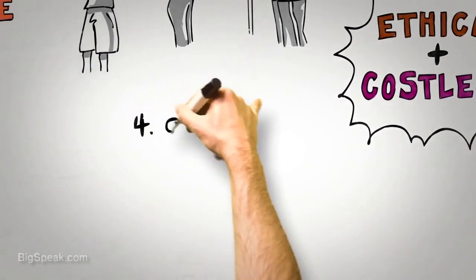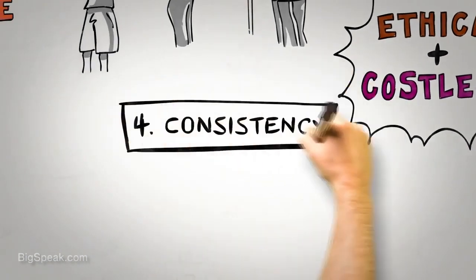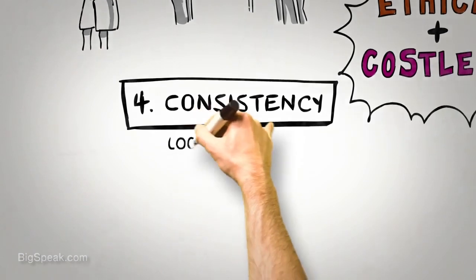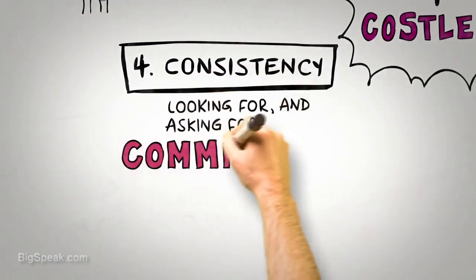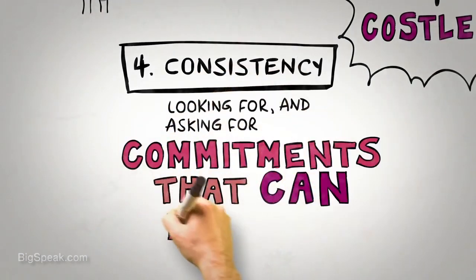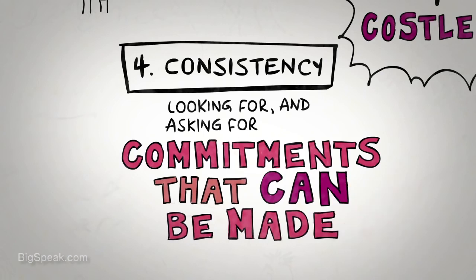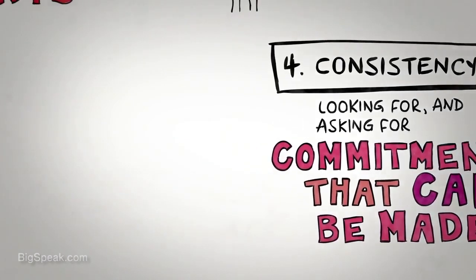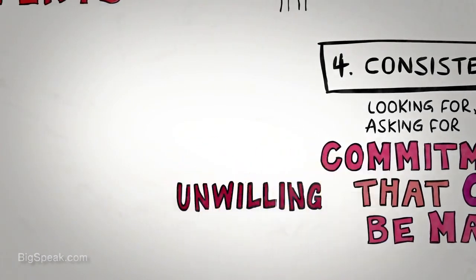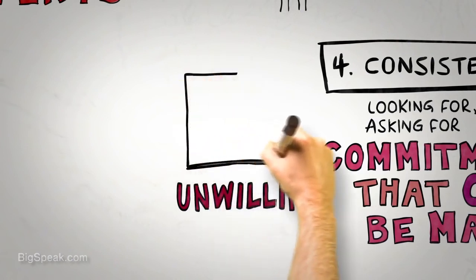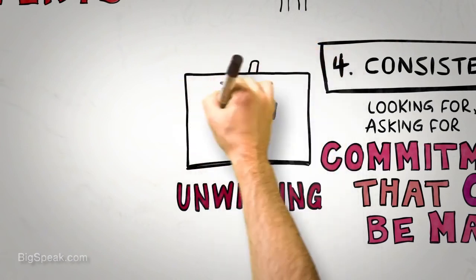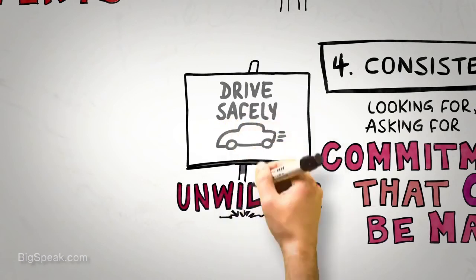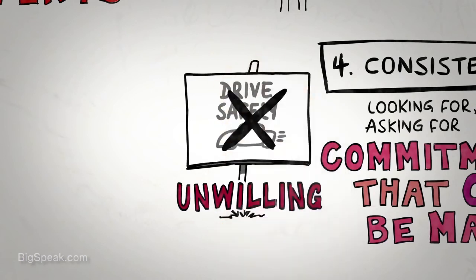The next principle is consistency. People like to be consistent with the things they have previously said or done. Consistency is activated by looking for and asking for small initial commitments that can be made. In one famous set of studies, researchers found, rather unsurprisingly, that very few people would be willing to erect an unsightly wooden board on their front lawn to support a Drive Safely campaign in their neighborhood.